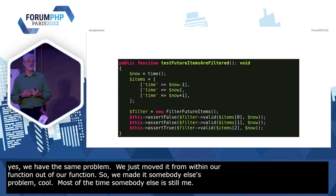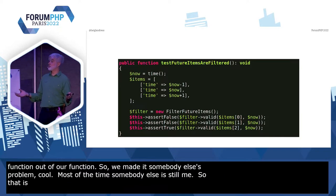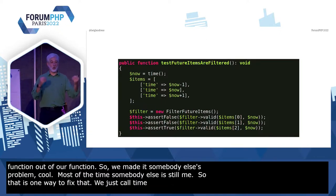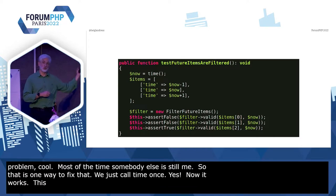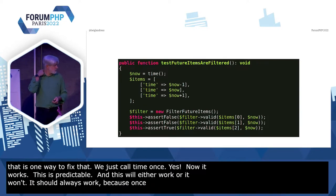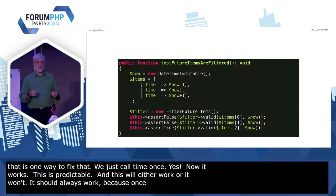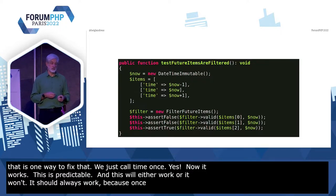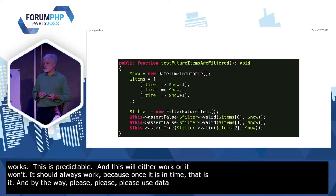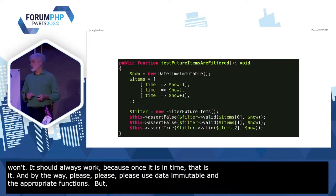That's one way to fix that: we just call `time()` once. Now it works. This is predictable, and this will always work, because we once instantiate time, and that's it. By the way, please use DateTimeImmutable and the appropriate functions. But that's a different story — we get to that later on.